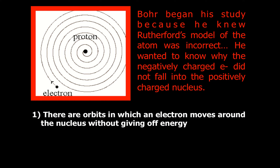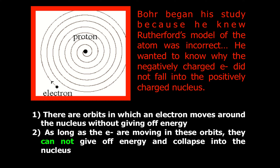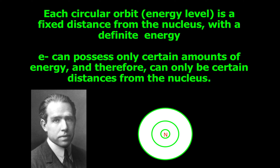He proposed that there are orbits in which an electron moves around the nucleus without giving off energy. And as long as the electrons are moving in these orbits, they cannot give off energy and collapse into the nucleus. Each circular orbit or energy level is a fixed distance from the nucleus with a definite energy. Electrons must be found in specific orbits — they cannot be found anywhere.